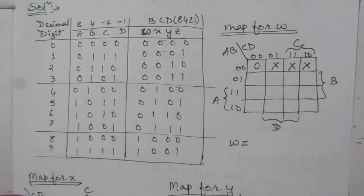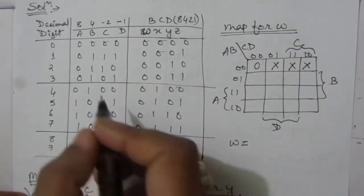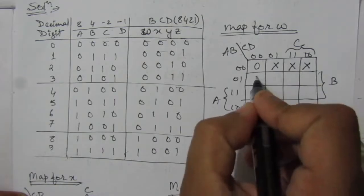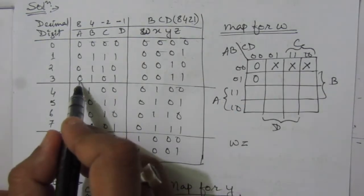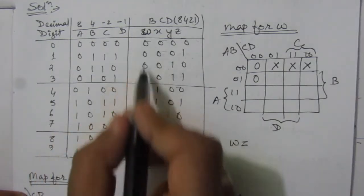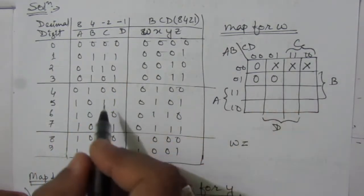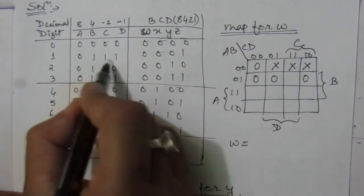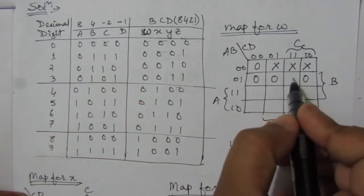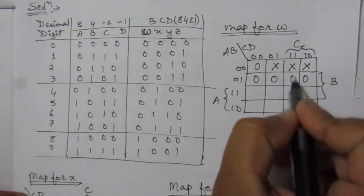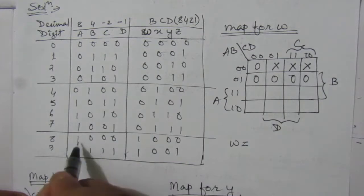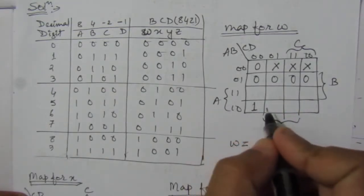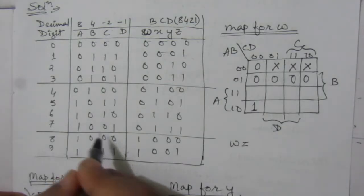For m3, we also have a don't care condition. For m4 (0100), we have 0100 in the table, so W value is 0. For m5 (0101), the W value is 0. For m6 (0110), the W value is 0. For m7 (0111), the W value is 0. For m8 (1000), we have W value equal to 1 — put 1 here. For m9 (1001), the W value is 0.